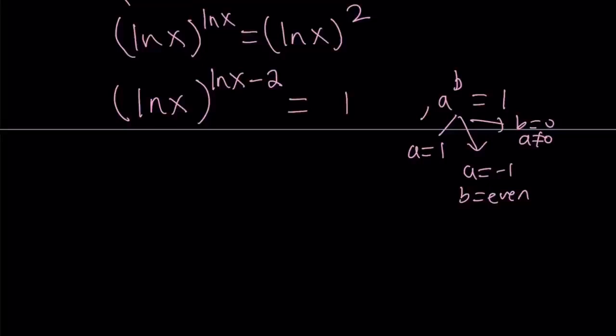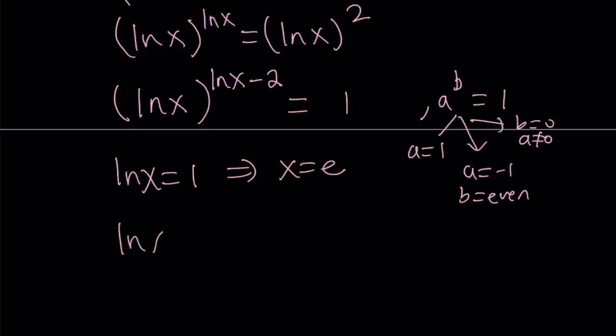Let's start with the first case: ln x equals one. In that case, if ln x is equal to one, that means x is equal to e. What about the other options? If a is equal to negative one, so we have ln x equals negative one, this just means that x is equal to e to the power of negative one, which can be written as one over e.